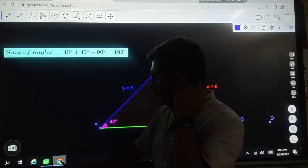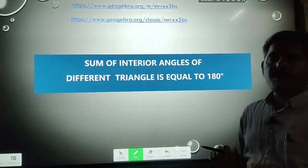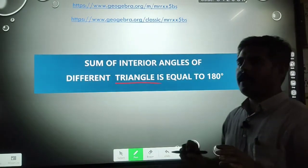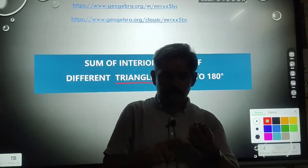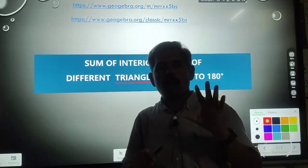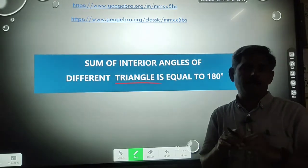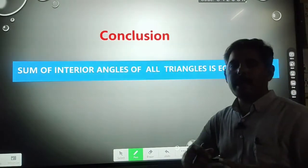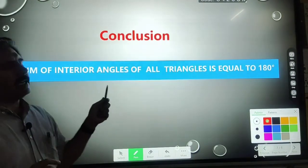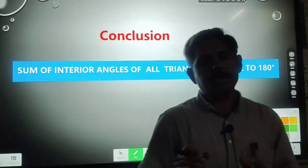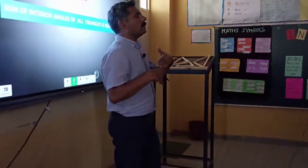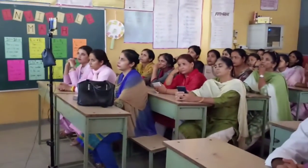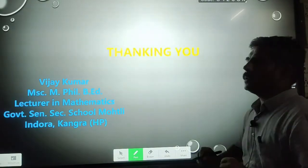So what we have observed here: the sum of interior angles of different triangles. We discussed four different triangles — isosceles, equilateral, right triangle, and scalene triangle. All the triangles have the sum of interior angles equal to 180 degrees. Conclusion: the sum of interior angles of all triangles is equal to 180 degrees. In this way, we can teach our students in a very effective way — we can change the values of the sides and values of the angles. Thank you very much.